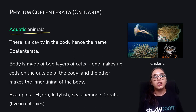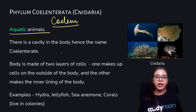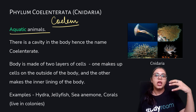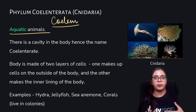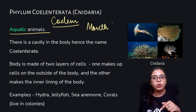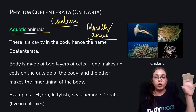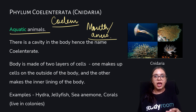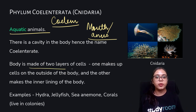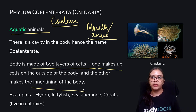Next is Coelenterata, also known as Cnidaria. These are aquatic animals. There is no coelum present — only the ectoderm and the endoderm. There is a cavity in the body, but this cavity is just a hollow structure with one opening that functions both as the mouth and the anus. The body is made up of two layers of cells: ectoderm forms the outside and endoderm forms the inner lining. Examples are Hydra, jellyfish, and sea anemone; they live in colonies.